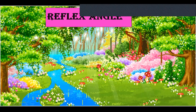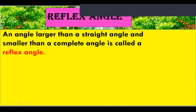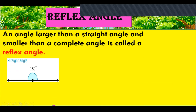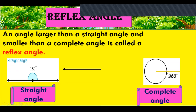Now we are going to study about reflex angle. An angle larger than a straight angle and smaller than a complete angle is called a reflex angle. A straight angle measures 180 degrees and a complete angle measures 360 degrees. A reflex angle is larger than 180 degrees but smaller than a complete angle.